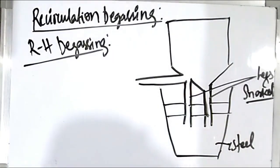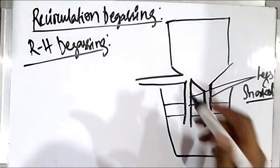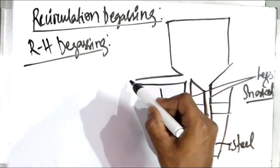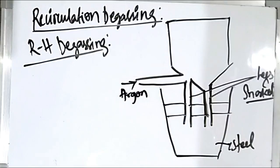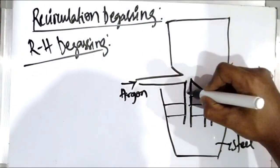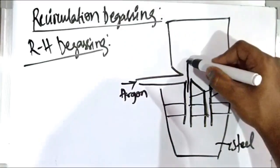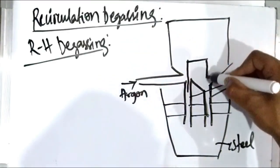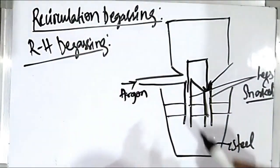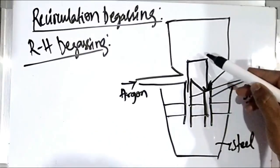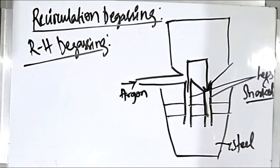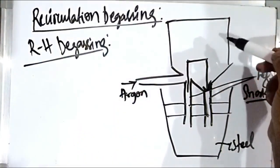There is also an inlet through which argon is introduced as lifter gas. The steel goes up into the vacuum chamber from one leg, degassing takes place inside the vacuum chamber, and the steel falls back through the other leg. This is how recirculation takes place — the cylindrical refractory-lined shell with two snorkels facilitates this continuous circulation.